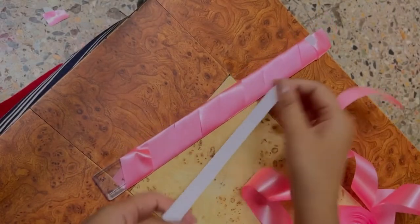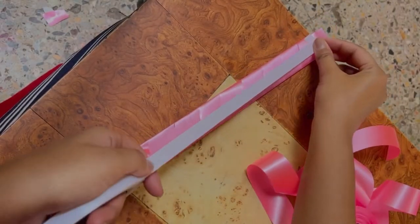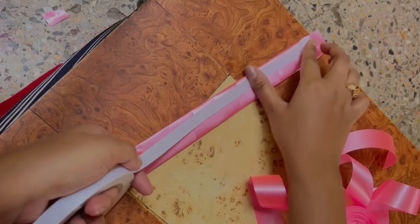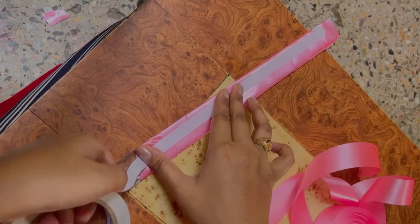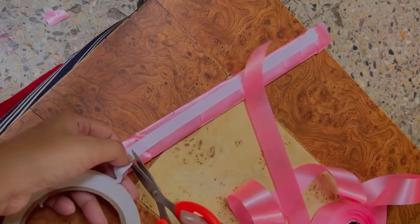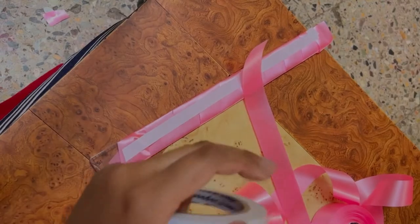When the ribbon is left to the right side, we will put two-sided paper tape on it. So when we roll it, it starts to look like a rose.